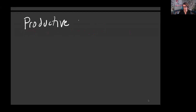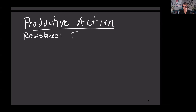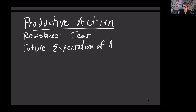Let's break down what resistance looks like — it comes in many forms and we'll apply it to each of the three components. If you think about resistance in terms of productive action, resistance here would be fear. FEAR equals the future expectation of awful results. When you're not in productive action, it often has to do with fear and uncertainty. Doubt leads to fear. Imposter syndrome leads to fear.